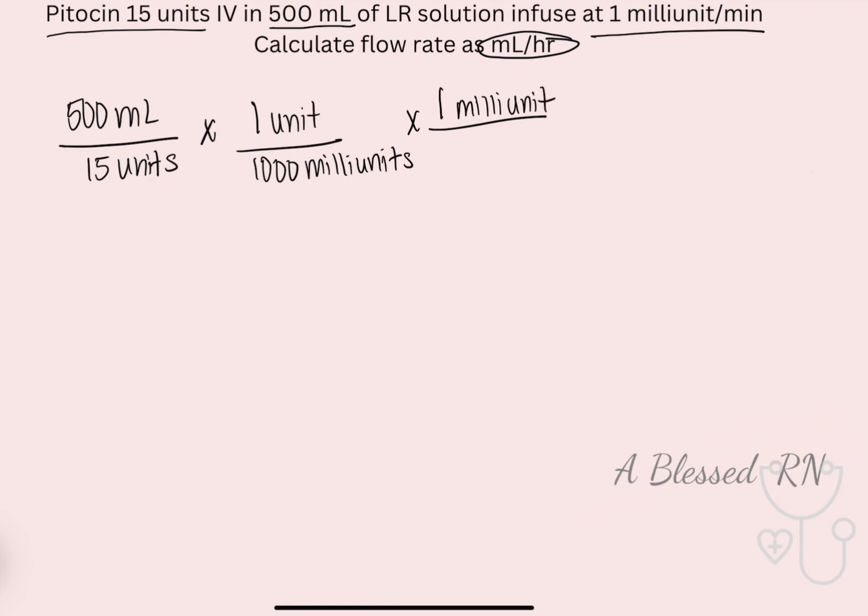All right, so then one milliunit over a minute according to your order. And then we have 60 minutes for one hour. If you look, you will cross out all of your units and be left with milliliter over hour.